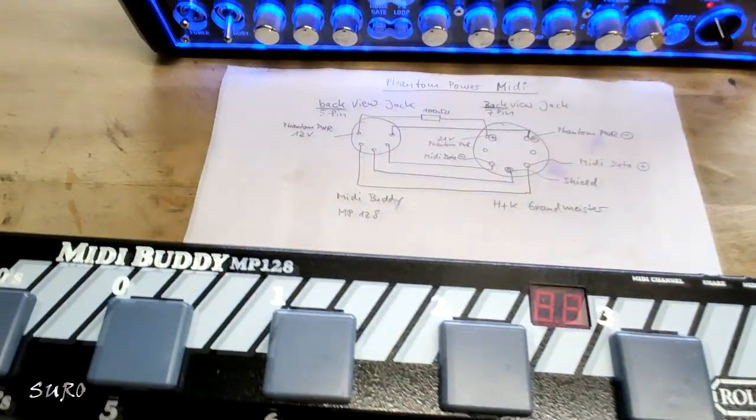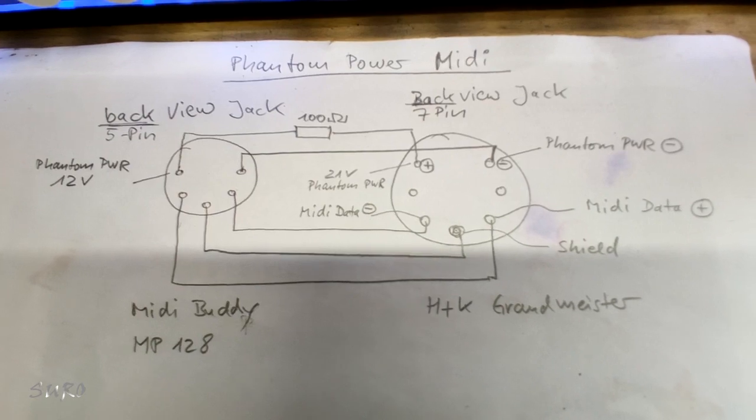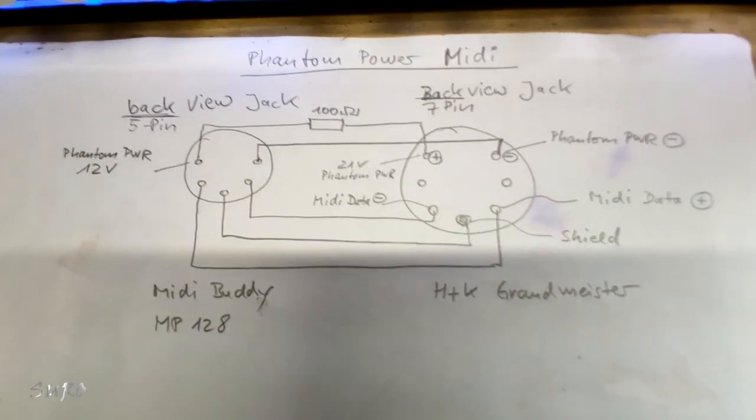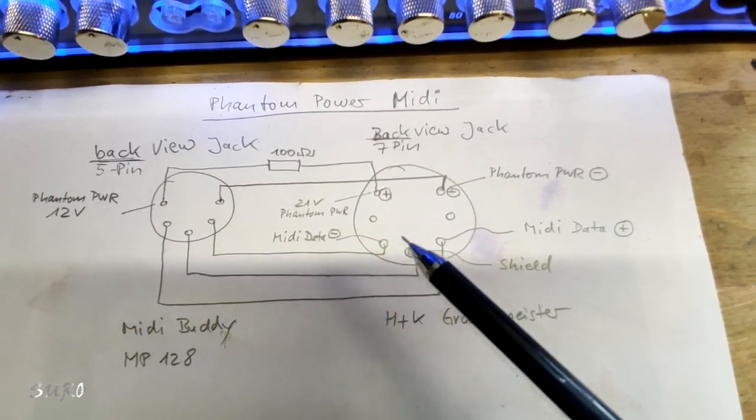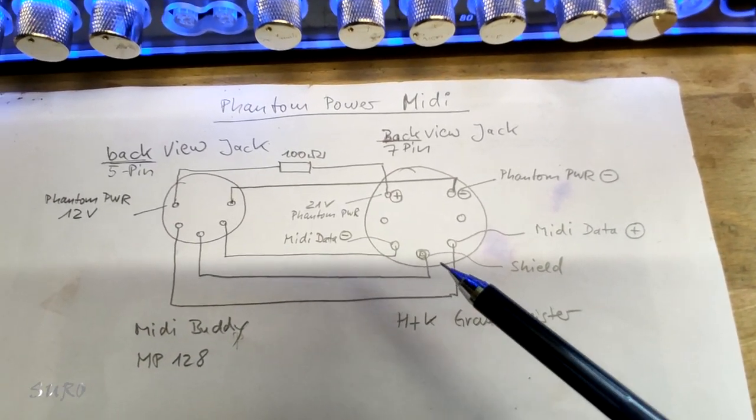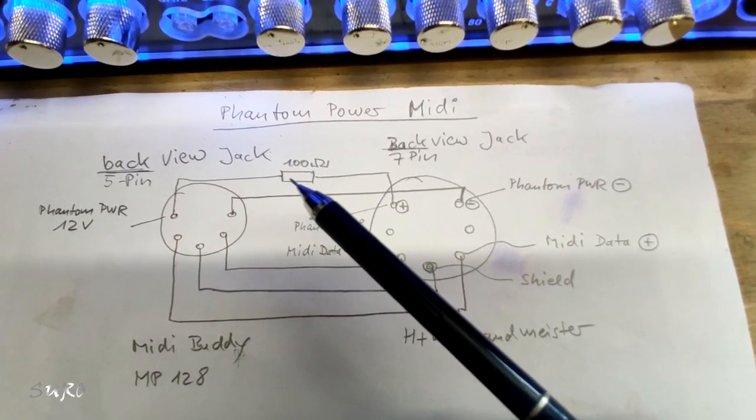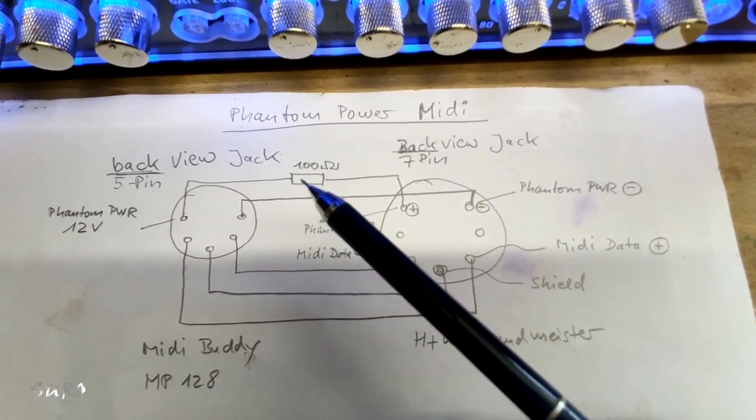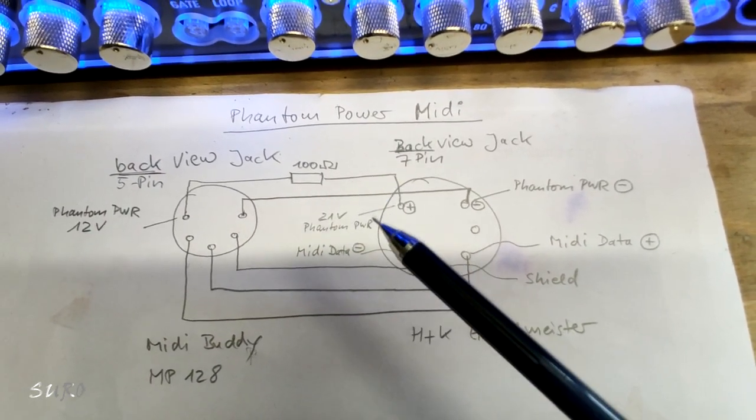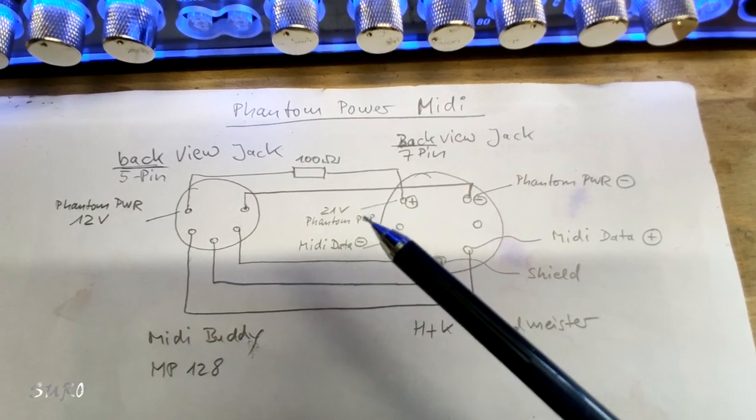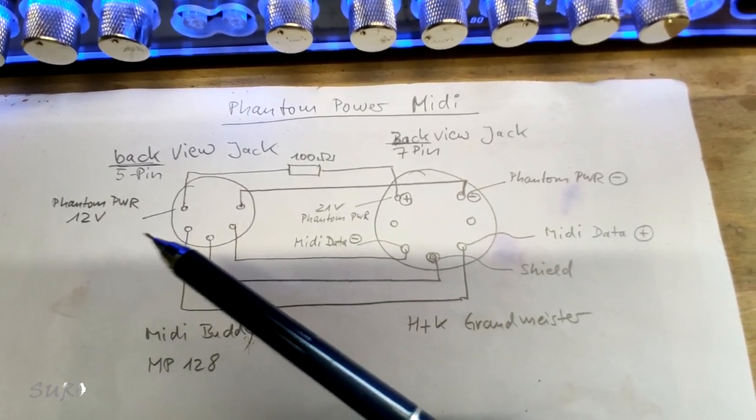So the whole setup is shown here. What we did is we took the 5-pin and made it up to the 7-pin via all these connections. I added a 100 ohm resistor here, which brings me from the roughly 21 volts phantom power from the Grandmeister to the 12 volts phantom power for the MIDI Buddy.